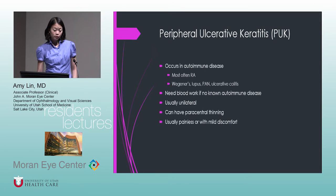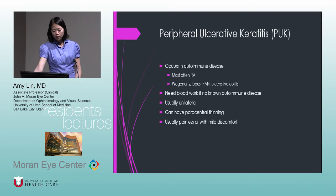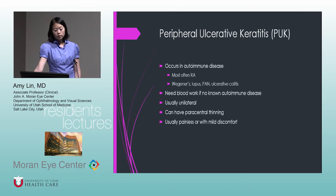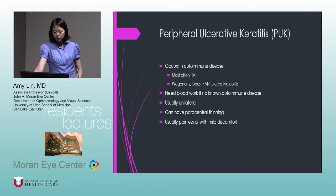Peripheral ulcerative keratitis or PUK occurs in autoimmune disease, most often with rheumatoid arthritis, but can occur with Wegener's, lupus, polyarteritis nodosa, and ulcerative colitis. Work these up if there's no known autoimmune disease. It's usually unilateral but can be bilateral. With rheumatoid arthritis, paracentral thinning is actually more common than peripheral thinning, and it's usually painless or causes only mild discomfort.